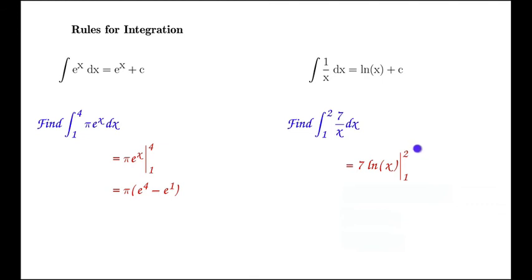Again, we plug in the upper bound first and then subtract the lower bound. This gives us 7 times the quantity (ln(2) - ln(1)).